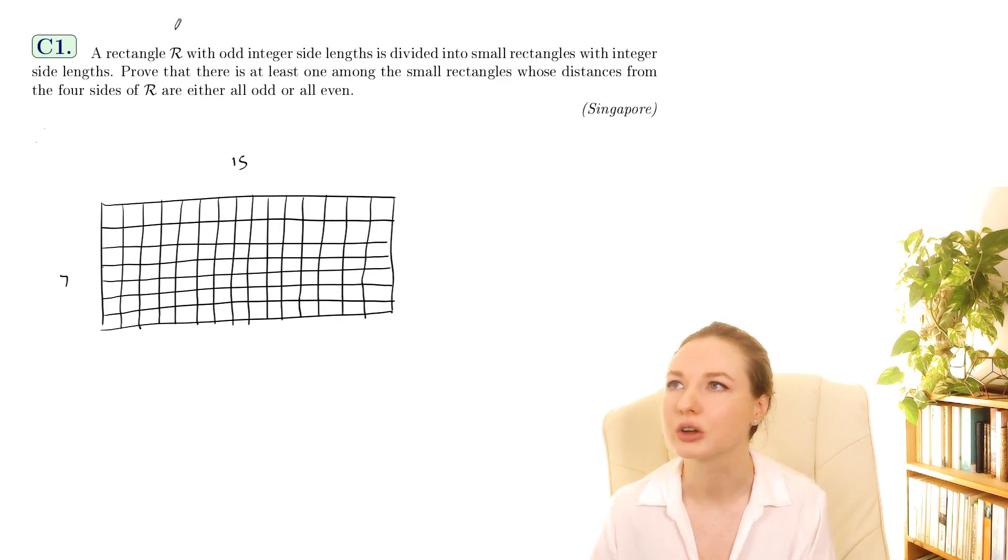So we've got a rectangle R with odd integer side lengths and then we want to divide it into small rectangles.